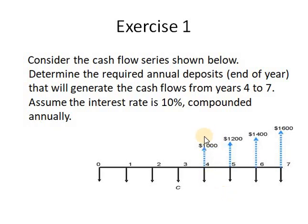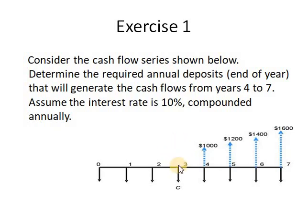Applying the equation gives P equals A (1,000) into P/A at i and n=4, plus the present worth of the gradient: P equals G into P/G at i, n=4, and G=200. The present value of this gradient is located at the previous period, so the result here is a future value regarding period zero.